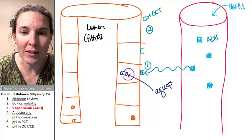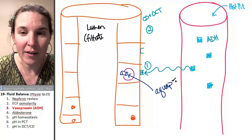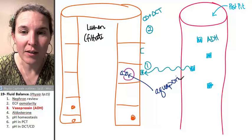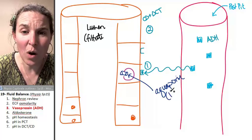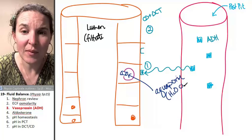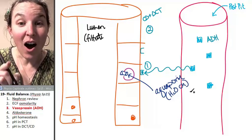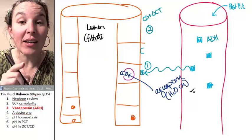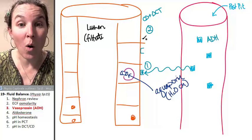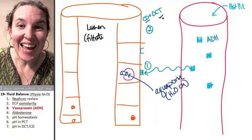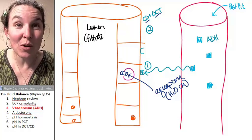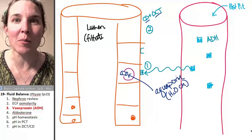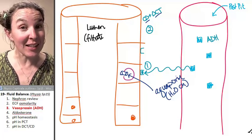It's called an aquaporin. And it's basically just a water channel. Now, if aquaporins are not in the cell membrane walls, then collecting duct and distal convoluted tubule cells are impermeable to water, just like the ascending loop of Henle.